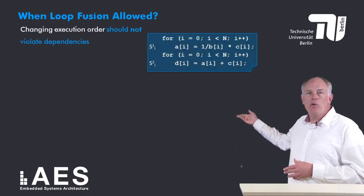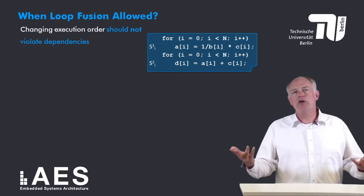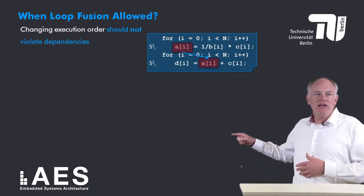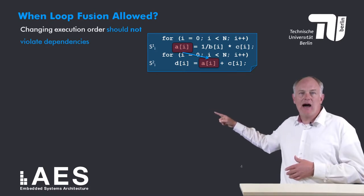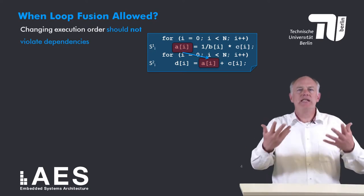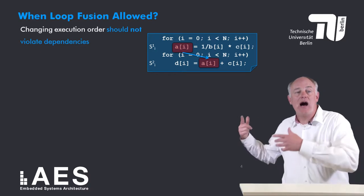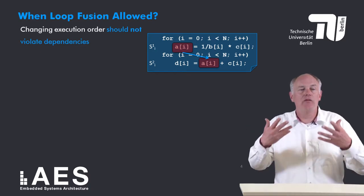This is the same code as before, except that it has been modified to process arrays instead of matrices. We see that iteration i of the first loop writes A[i] and that iteration i of the second loop reads A[i]. So there is a data dependency between the statement instance i of the first loop and the statement instance i of the second loop.